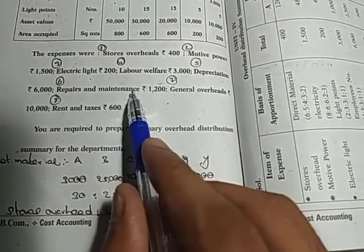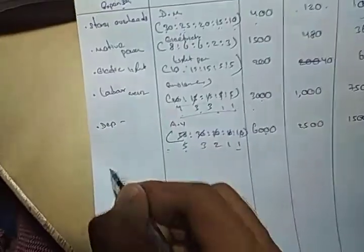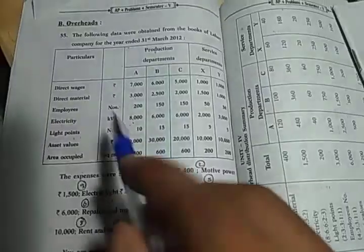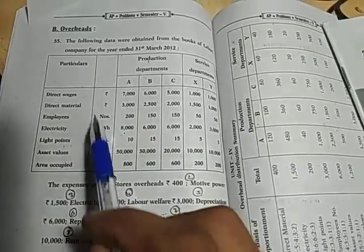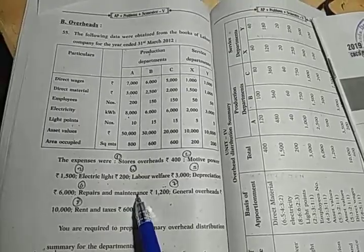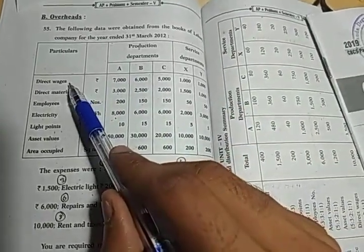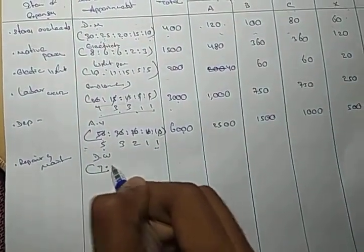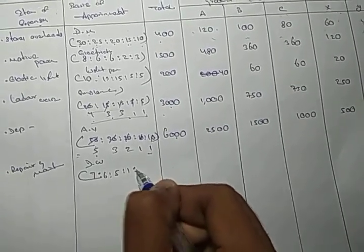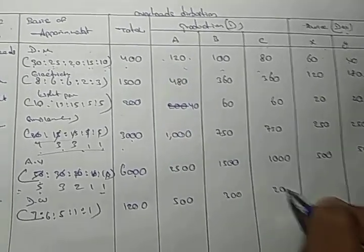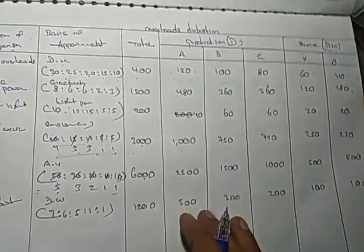Next repair and maintenance 1200. This is what we need to do in the factory repair and maintenance. Direct wages: 7000, 6000, 5000, 1000, 1000. Distribution: first 500, next 300, next 300, next 200, next 100, and 100.